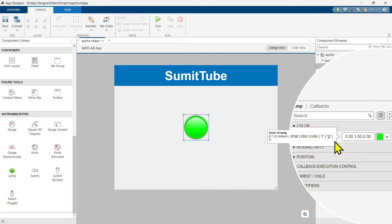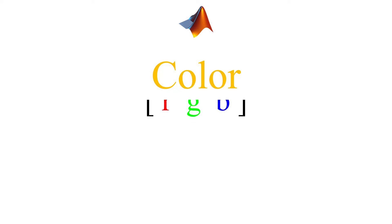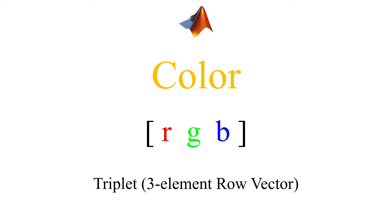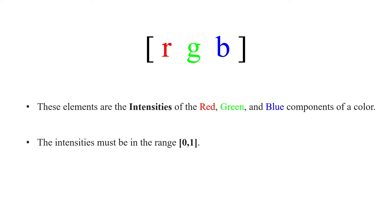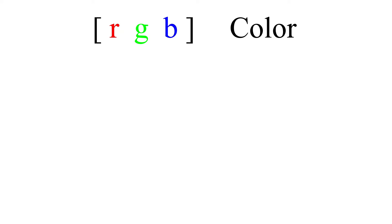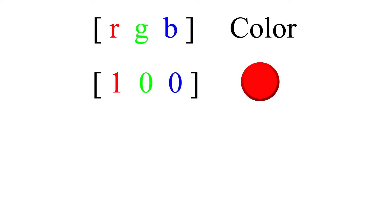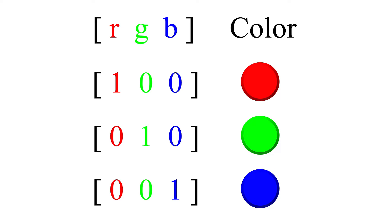Now let's talk about this color in detail. MATLAB handles color using an RGB triplet — actually, they are three-element row vectors. These elements are the intensities of the red, green, and blue components of a color — hence the name RGB. The intensities must be in the range from 0 to 1. For example, if the R component is 1 and the other components are 0, we get the color red. If the green component is 1, we get green. And if the blue component is 1, we get blue.